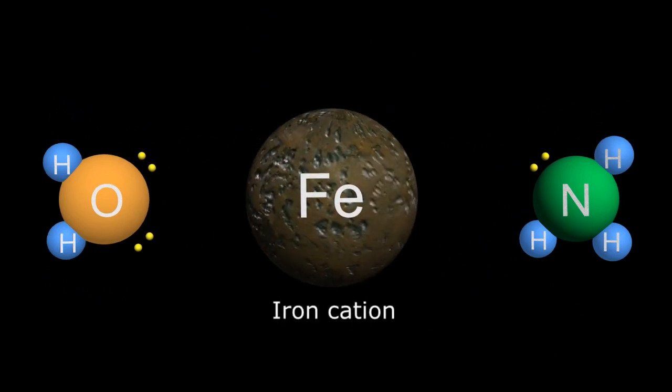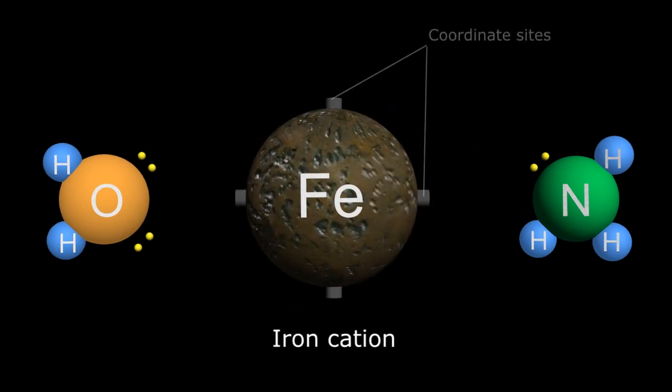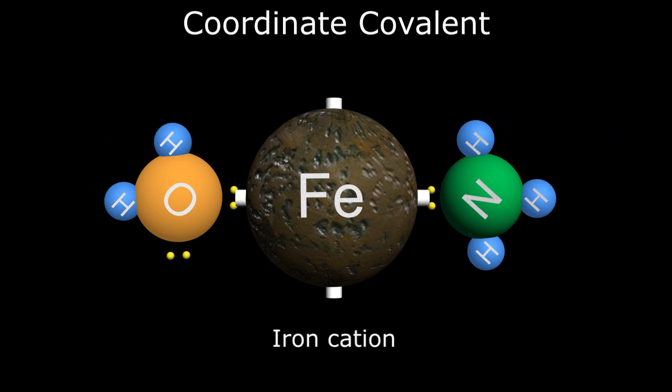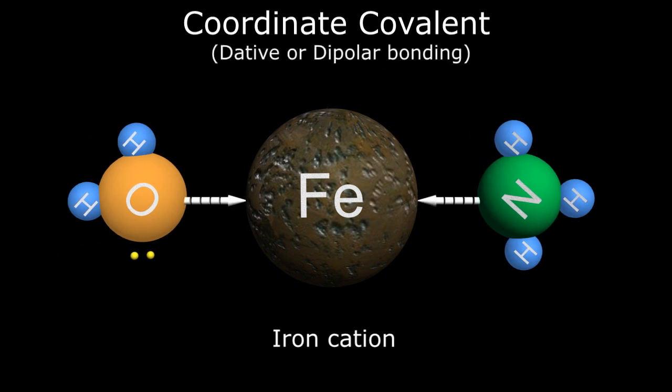Oxygen and nitrogen will share their paired electrons and bind to coordinate sites on the cation metal. This asymmetric sharing of electrons is therefore known as coordinate covalent, dative, or dipolar bonding, and can be represented by an arrow indicating the asymmetric electron sharing.